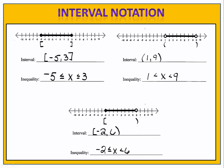On the second exercise, we have the interval from 1 to 9. Both have open circles, which indicate that 1 and 9 are not included in the set. Therefore, we use parentheses. We can write this as an inequality: 1 is less than x, which is less than 9 — x is between 1 and 9.